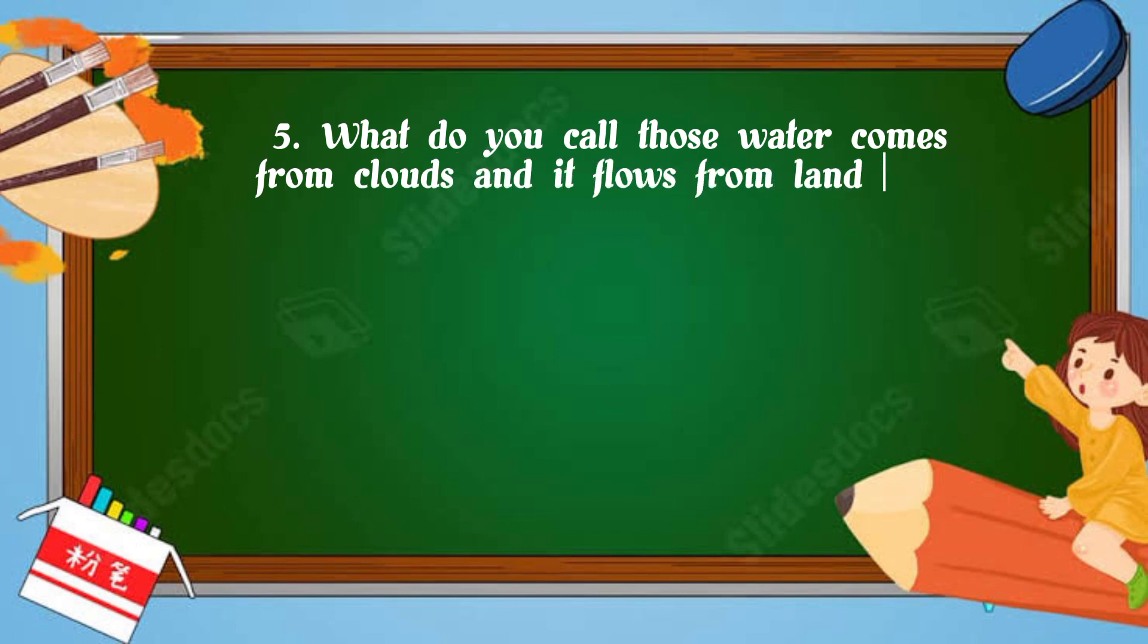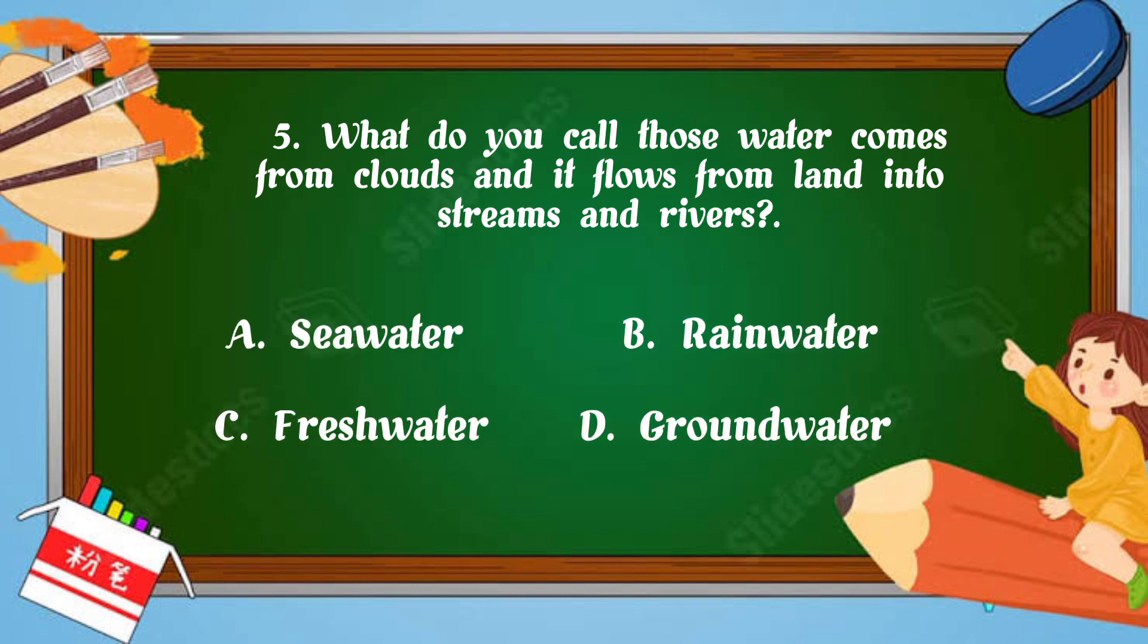Number 5: What do you call those waters that come from clouds and flow from land into streams and rivers? A. Seawater, B. Rainwater, C. Freshwater, D. Groundwater. Your timer starts now. Time is up! What is your answer? The correct answer is letter B, Rainwater.